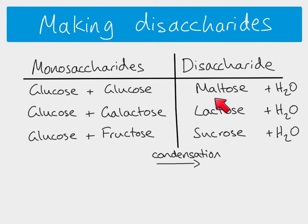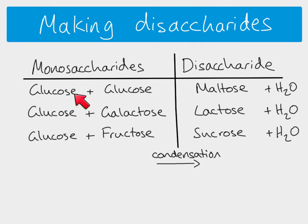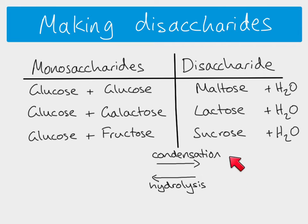To go the other way — if you have a disaccharide like maltose and want to break it into two glucose molecules — you need to add water. These are all enzyme-controlled reactions. Maltose plus water gives glucose and glucose. Starting with a disaccharide and adding water is called a hydrolysis reaction — 'hydro' because you need water, and 'lysis' because something bigger is being split into something smaller, meaning splitting. We will look at the details of making monosaccharides and disaccharides using these two reactions in another video.